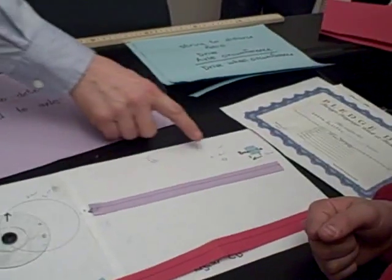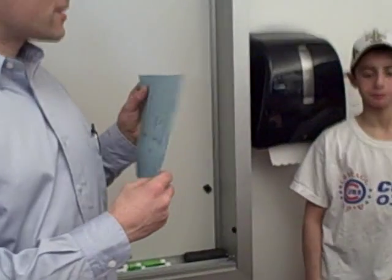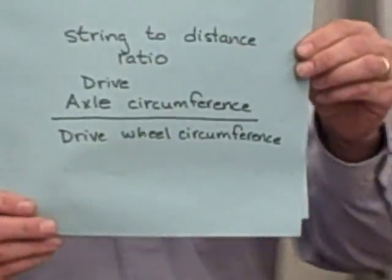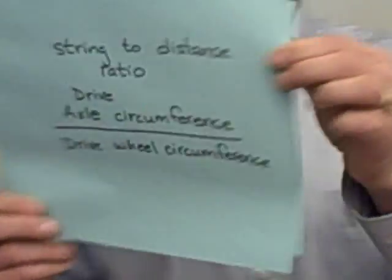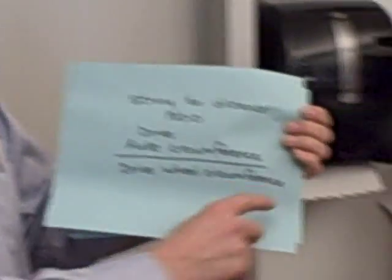If you have small wheels, this much string will make the car go this far. And what you need to figure out is how much string, how much distance you get out of each centimeter of string. So you have to figure the string to distance ratio. And that is the axle circumference divided by the drive wheel circumference. And there's a couple ways to figure that out.